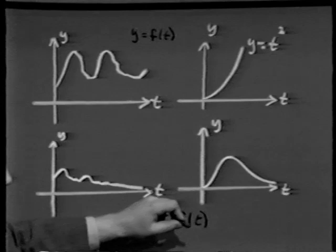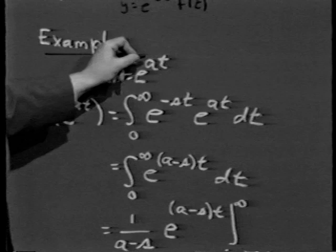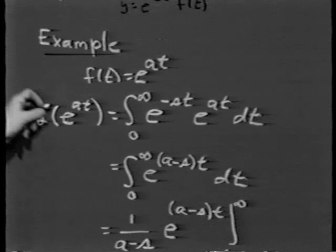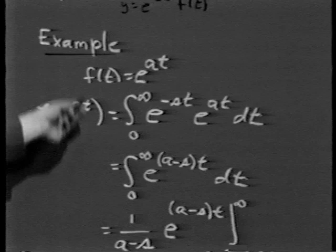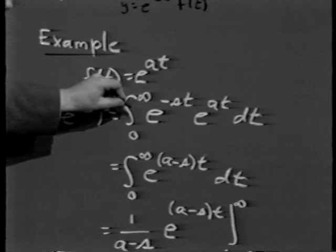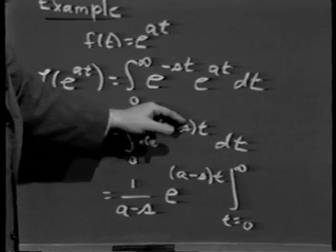Let me illustrate by example. Suppose f of t equals e to the at, where a is a given constant. By definition, the Laplace transform of e to the at is the integral from 0 to infinity of e to the at times e to the minus st dt — that is, the integral of e to the quantity a minus s times t, dt. Since a and s are constants, this evaluates to 1 over a minus s times e to the a minus s times t, evaluated as t goes from 0 to infinity.